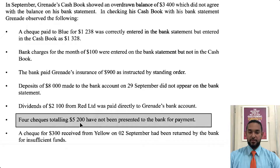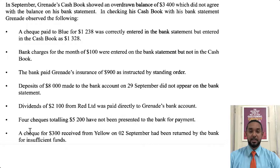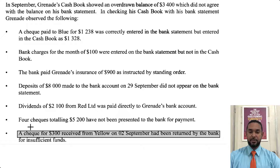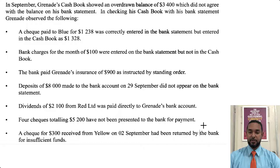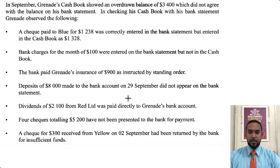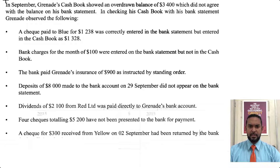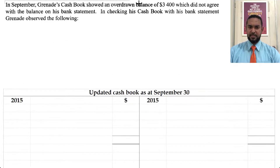Four checks totaling 5,200 had not been presented to the bank for payment — those are unpresented checks, so they will go in the bank rec. A check for 300 received from Yellow on 2nd September had been returned by the bank for insufficient funds. Those are NSF checks and will have to be updated in the cash book.